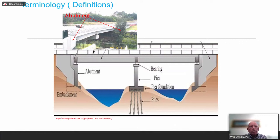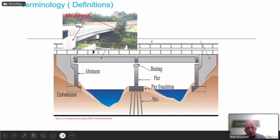You can see the bearings, the abutment, and the embankment that prevents fill getting into the waterway. The piles are visible here. The substructure is from underneath the bearing right to where the piles bear. This is the foundation for the pier and the foundation for the abutment. These are the wing walls — abutment wing walls — which prevent fill getting onto the side of the bridge.